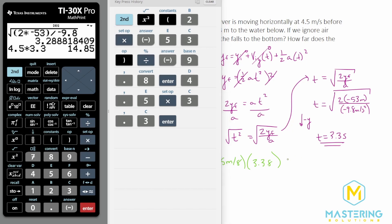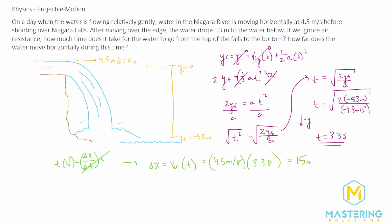So let's round that to 15. So it goes 15 meters. So the water after leaving the edge of the cliff falls and from the base of the cliff out to where it hits is 15 meters.